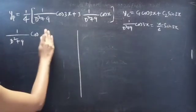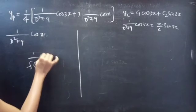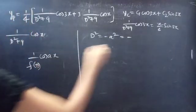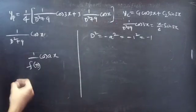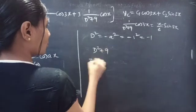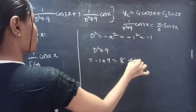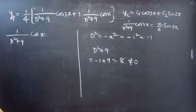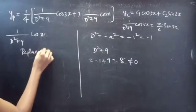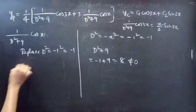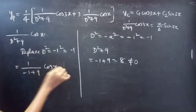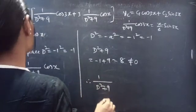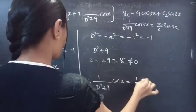Now find 1/(D²+9)·cosx. This is also of the form 1/f(D)·cos(ax) with a = 1, so D² = −1² = −1. Replacing D² by −1 in the denominator: −1 + 9 = 8 ≠ 0, so we can replace directly. We get 1/(−1+9)·cosx = (1/8)·cosx.